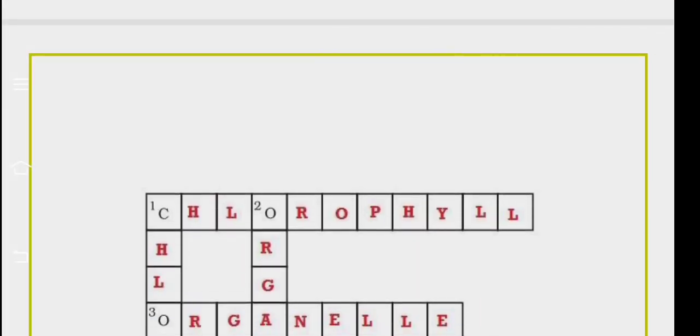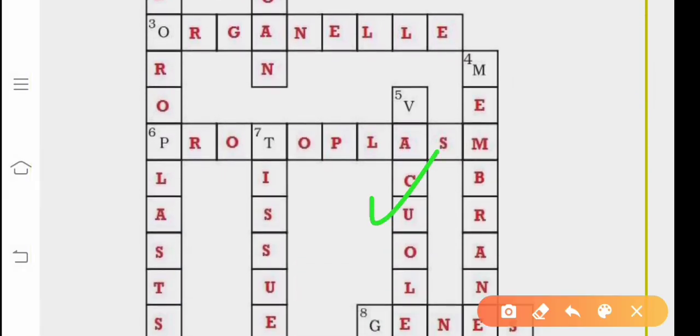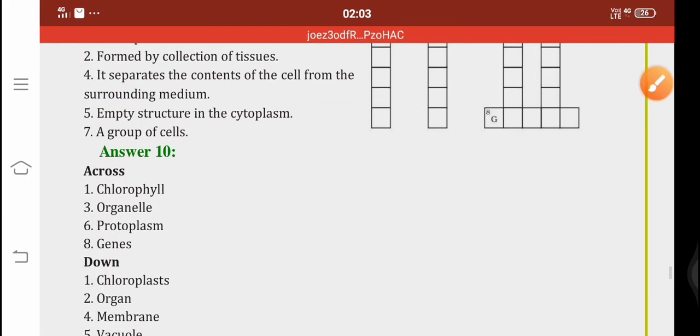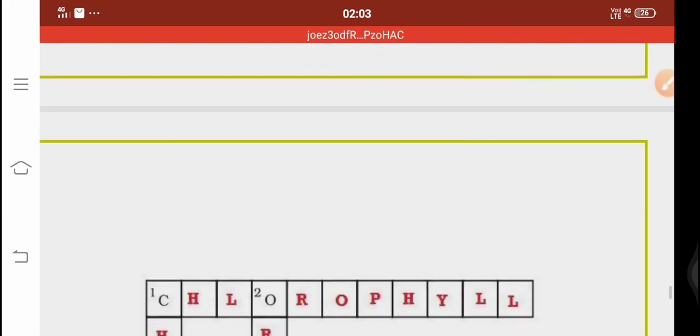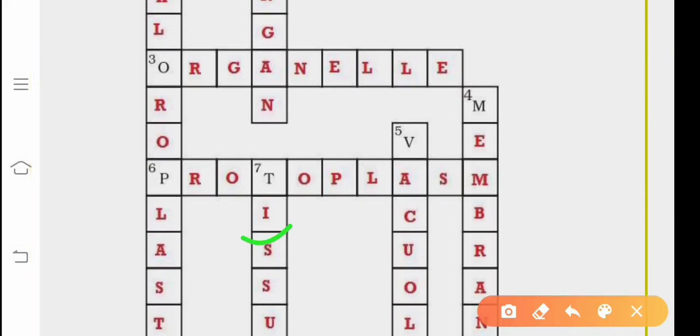Where the vacuole is written here. It is here. And the last is a group of cells. A group of cells is known as tissues. Here it is.